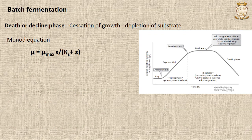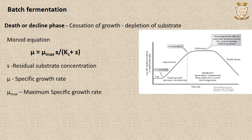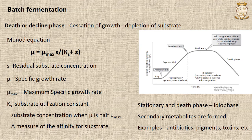The Monod equation is: µ = µmax × S / (Ks + S), where S is the residual substrate concentration, µ is the specific growth rate, µmax is the maximum specific growth rate, and Ks is the substrate utilization constant. Ks equals the substrate concentration where µ is half of µmax, and Ks is a measure of the affinity of the organism towards the substrate. The secondary metabolites are produced during the stationary phase and death phase, and this phase is also known as the idiophase.